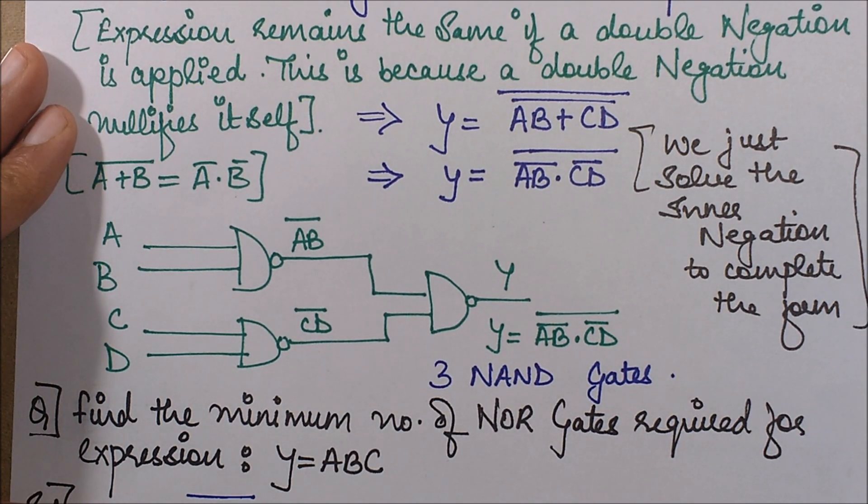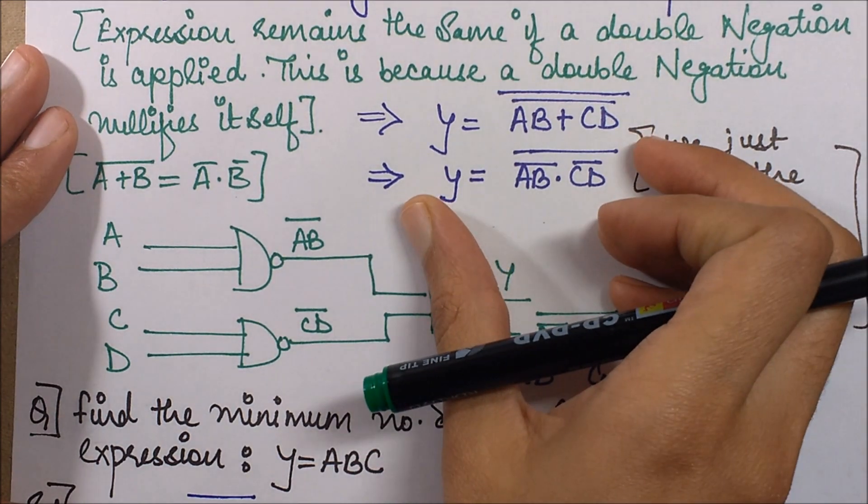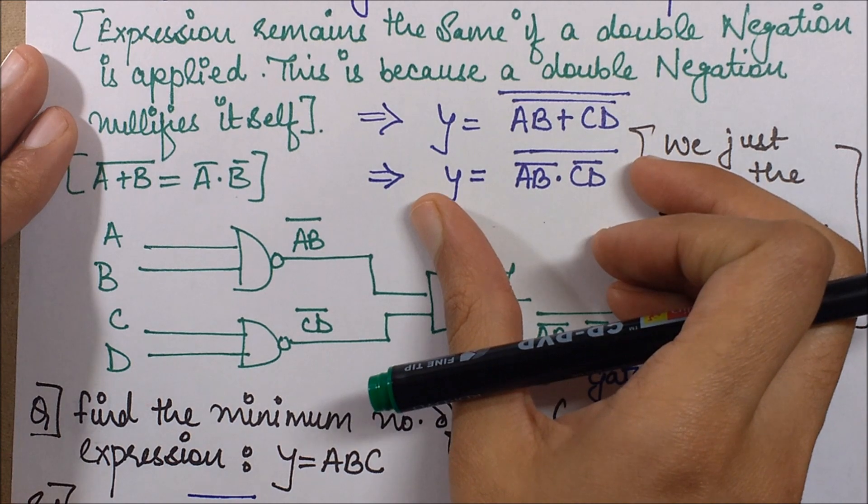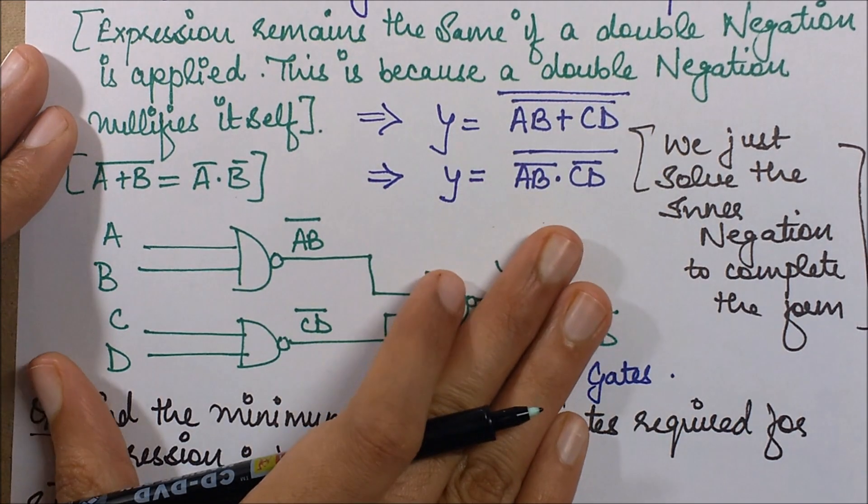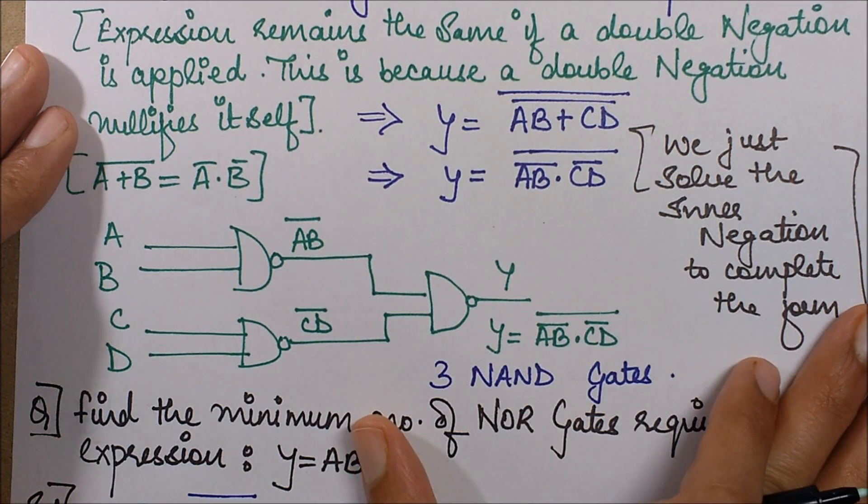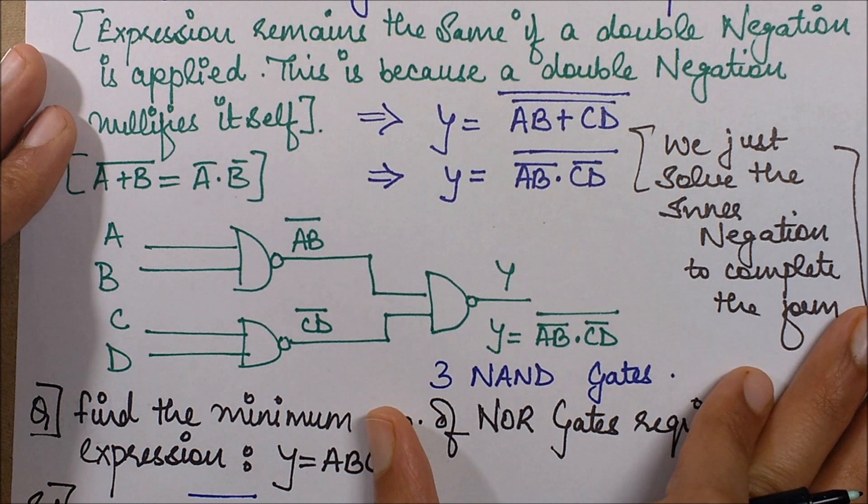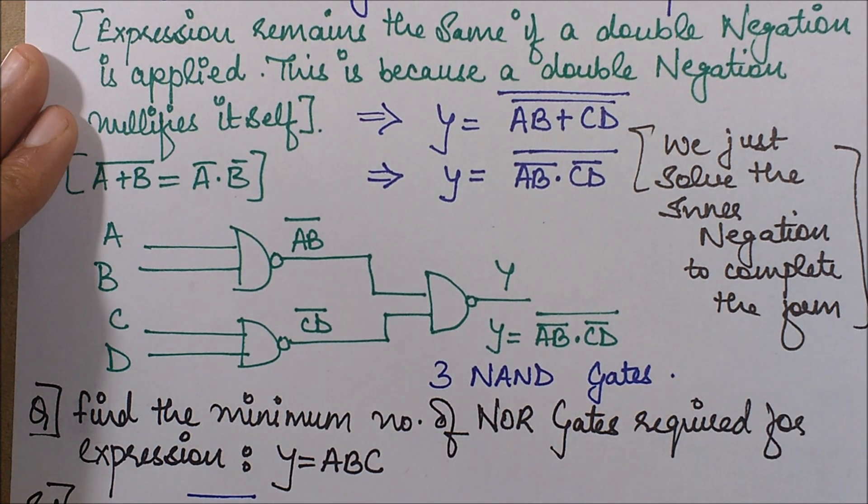So that is the final answer for this question. So this is what we do in such type of questions. We first formulate the expression in the required form, then we construct the circuit, and then we find out the required number of NAND gates. This is how I personally solve this type of questions.